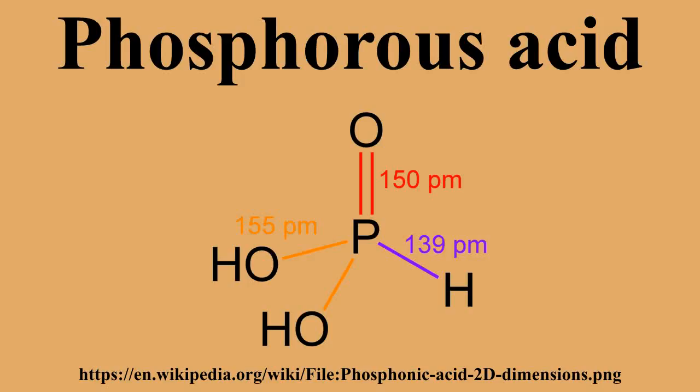The reduced phosphorus acids are subject to similar tautomerism involving shifts of H between O and P. In the solid state, HPO(OH)2 is tetrahedral with one shorter P=O bond of 148 pm and two longer P-O bonds of 154 pm.